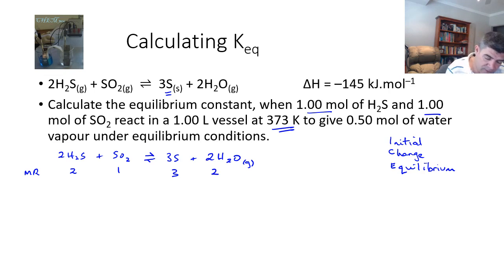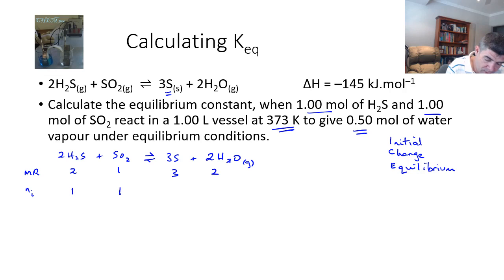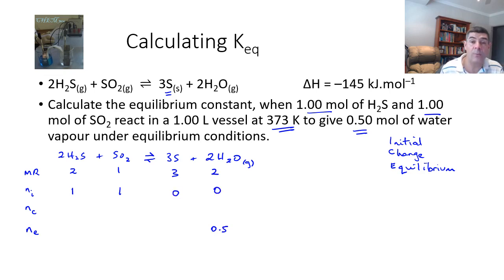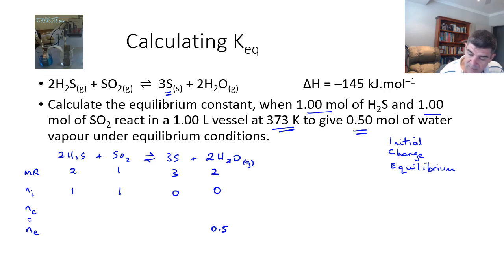The initial number of moles is 1 for H₂S and 1 for SO₂. We're told that we produce half a mole of water vapor under equilibrium conditions, so the number of moles at equilibrium for water is 0.5. Initially we assume no product, so the change must have been 0.5 — we add the initial and the change to find the equilibrium value.